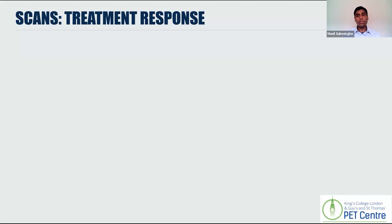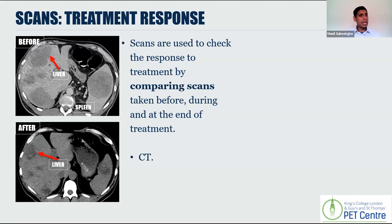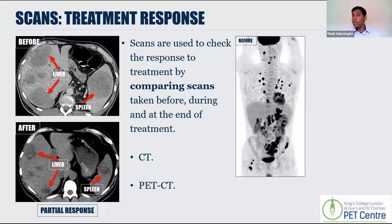Once people have started treatment for lymphoma, we can use scans to help identify how well these treatments are working. We compare appearances on a scan during or after treatment with appearances before treatment started — essentially spot the difference. Here's an example of a CT scan done before treatment, showing abnormal areas of dark gray within the liver and the spleen, representing lymphoma involvement. At the end of treatment, these areas are still present but smaller than before, so we would class this as a partial response — it's not completely gone, but it's slightly gone.